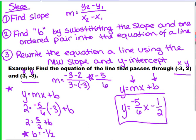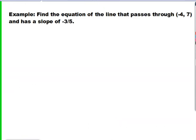Let's look at our second example. We're finding the equation of a line that passes through negative 4, 7, and it has a slope of negative 3 fifths. The first thing in solving for these is to find the slope. Now, we're already given the slope of the line, so that's taken care of. Step 1 is complete.